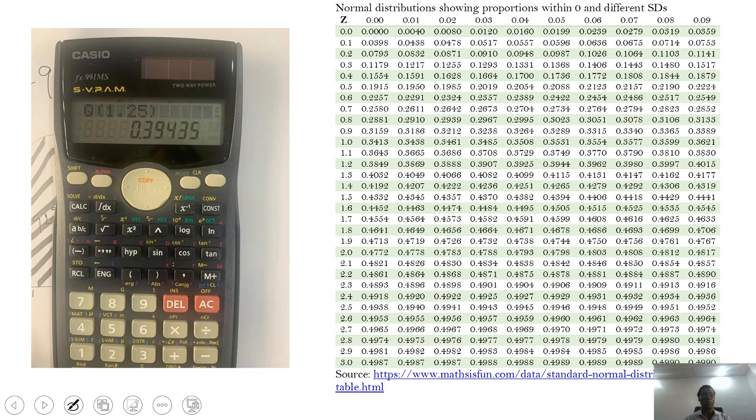Let's assume that we want to know the proportion between the mean and 1.25 standard deviations. You'll repeat that process: press shift, press 3 which is distribution, and then press Q. If you press that, which is 2, then you can type 1.25 in the bracket. It will give you this value.